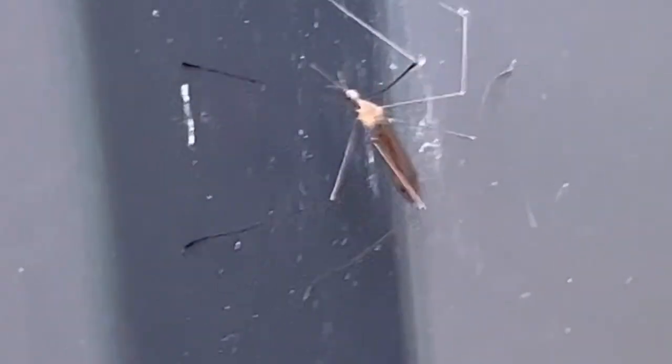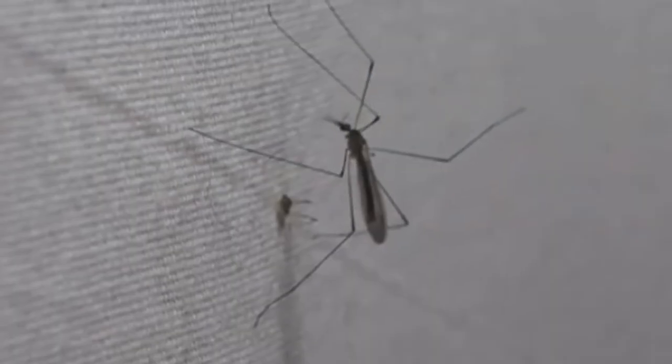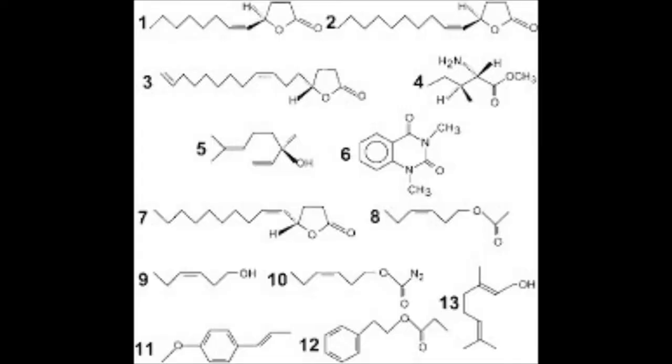But when we analyze my footage of this crane fly bouncing, we can clearly see that it is clinging on to the wall. You can't fly without takeoff, can you? And here we come to another reason why they do this.